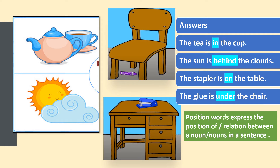Okay, so here are the answers. The tea is in the cup. The sun is behind the clouds. The stapler is on the table. And the glue is under the chair.